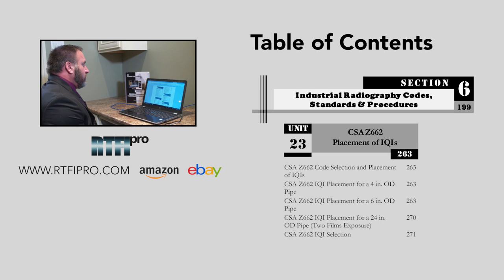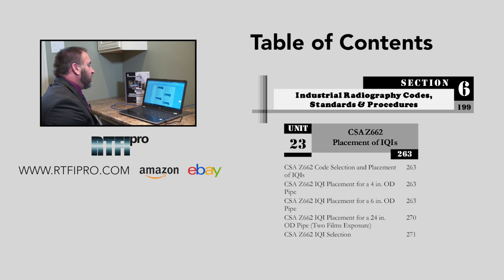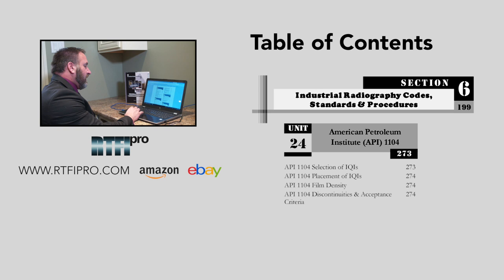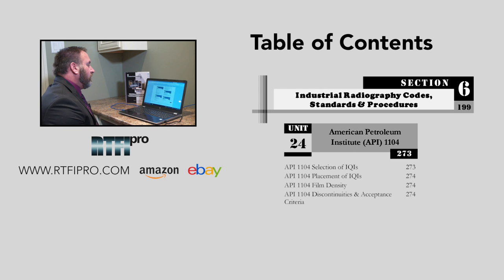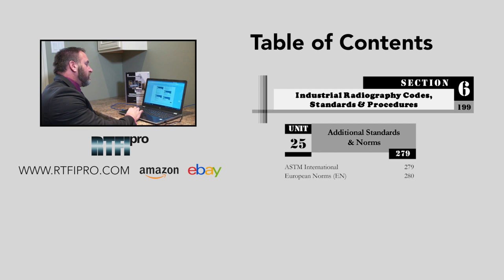Unit twenty-three covers CSA Z662 placement of IQIs: code selection and placement of IQIs, IQI placement for 4-inch OD pipe, 6-inch OD pipe, 24-inch outside diameter 2-film exposure, and CSA Z662 IQI selection. Unit twenty-four addresses API — American Petroleum Institute — covering API 1104 selection of IQIs, API 1104 placement of IQIs, API 1104 film density, and API 1104 discontinuities and acceptance criteria. Unit twenty-five covers additional standards and norms, including ASTM International and European Norms.